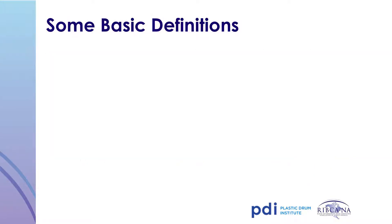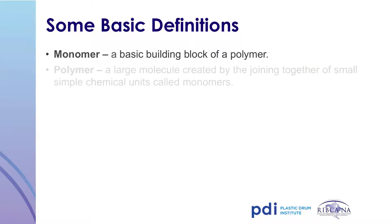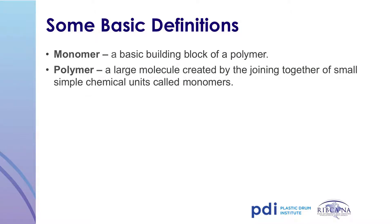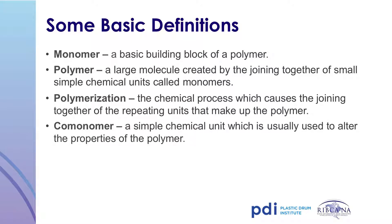It may be helpful to review some basic definitions. A monomer is the basic building block of a polymer. Monomers are combined to form a polymer, and the process of joining monomers together is called polymerization. A co-monomer is a second type of monomer that can be added during polymerization, primarily to modify the resin's physical properties. Butene and hexene are commonly added co-monomers.